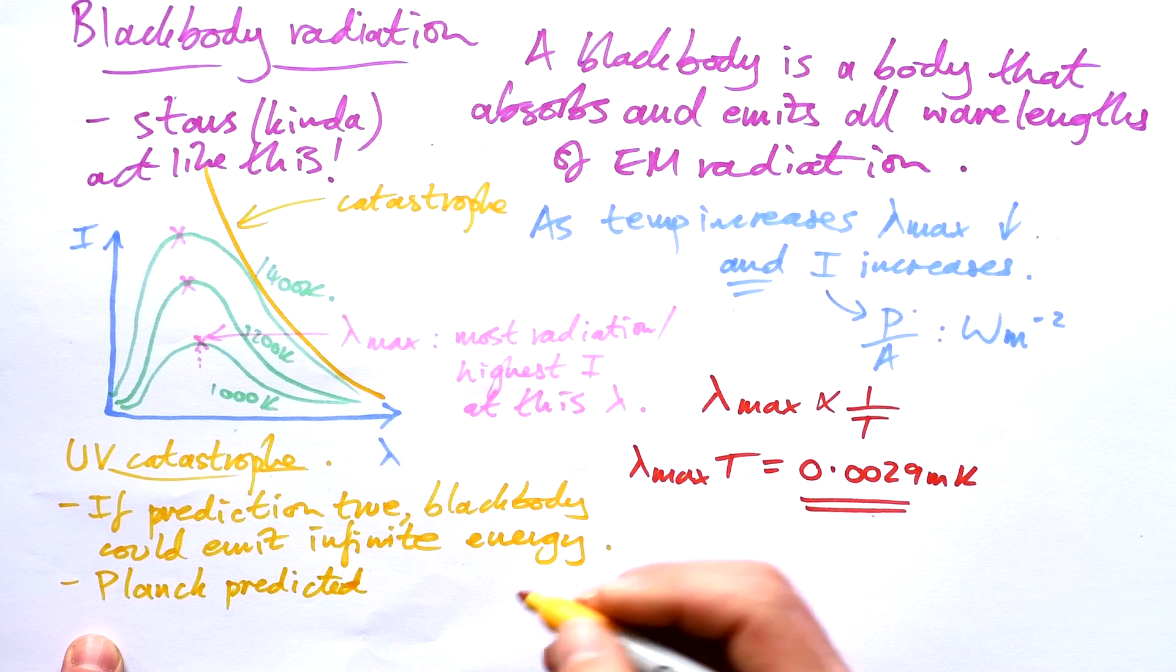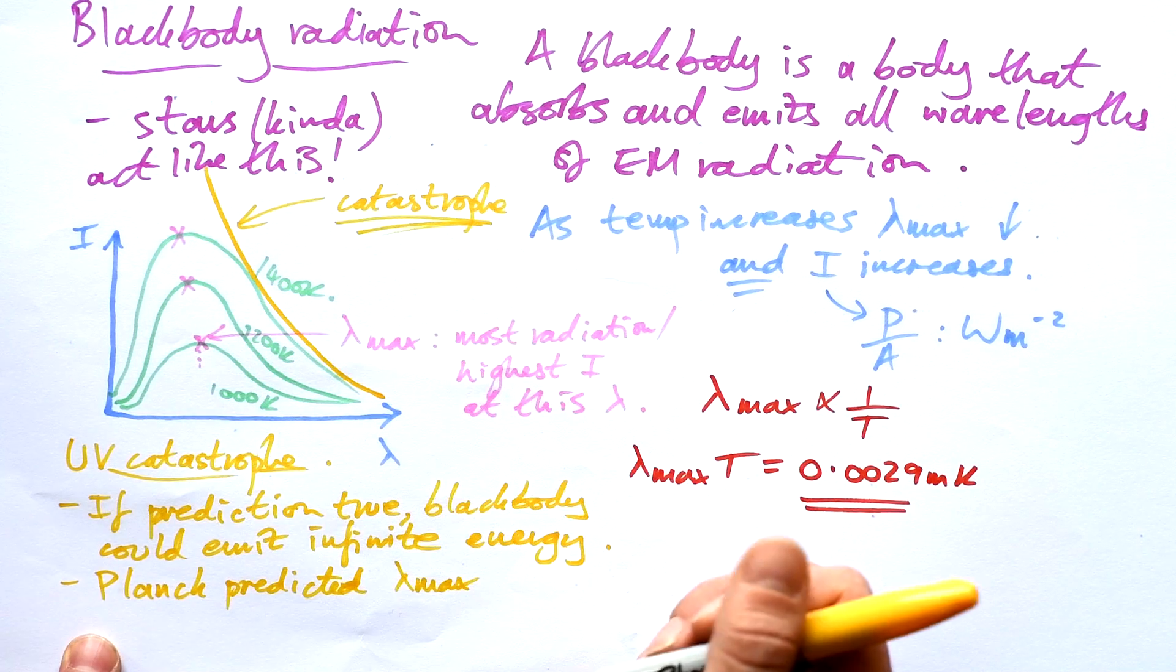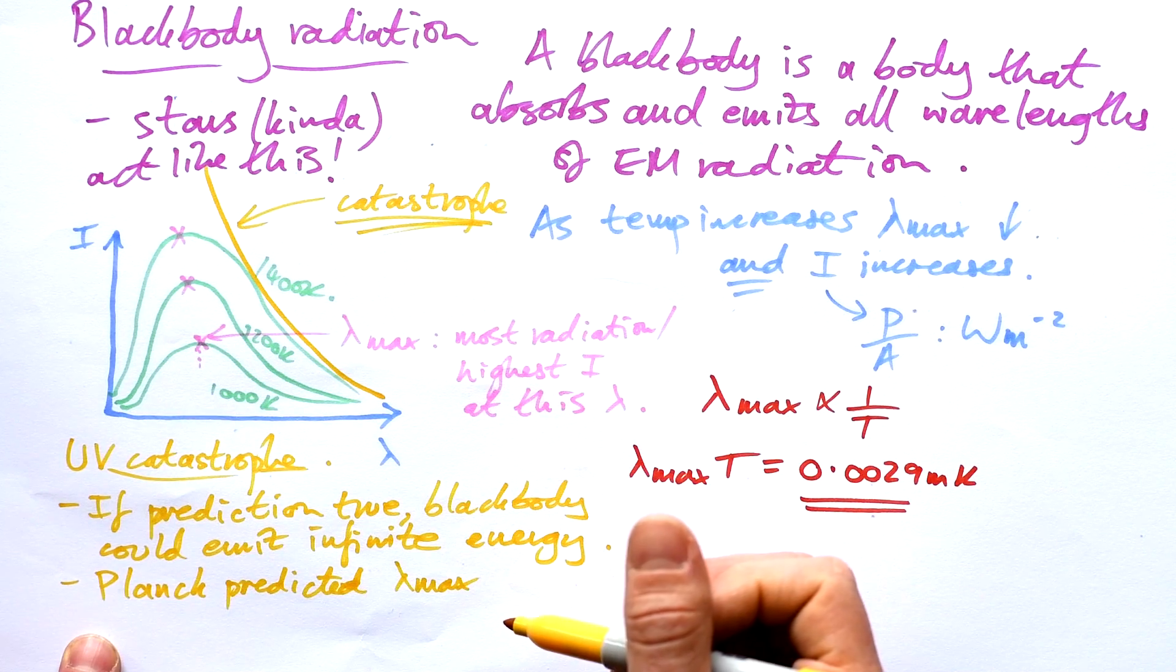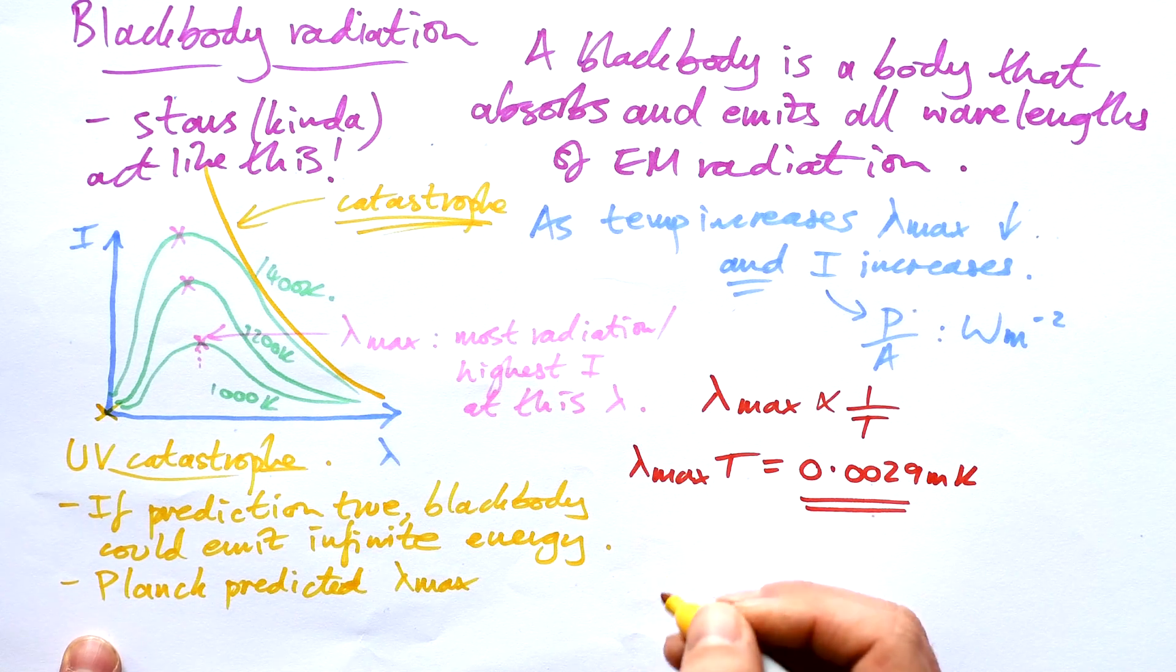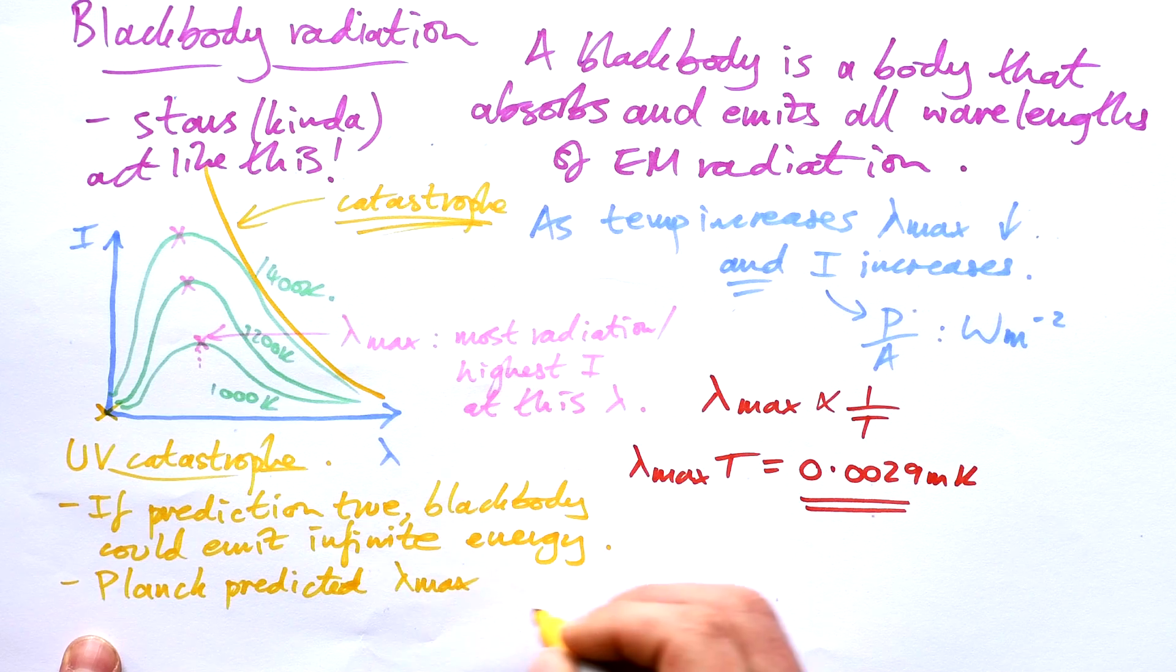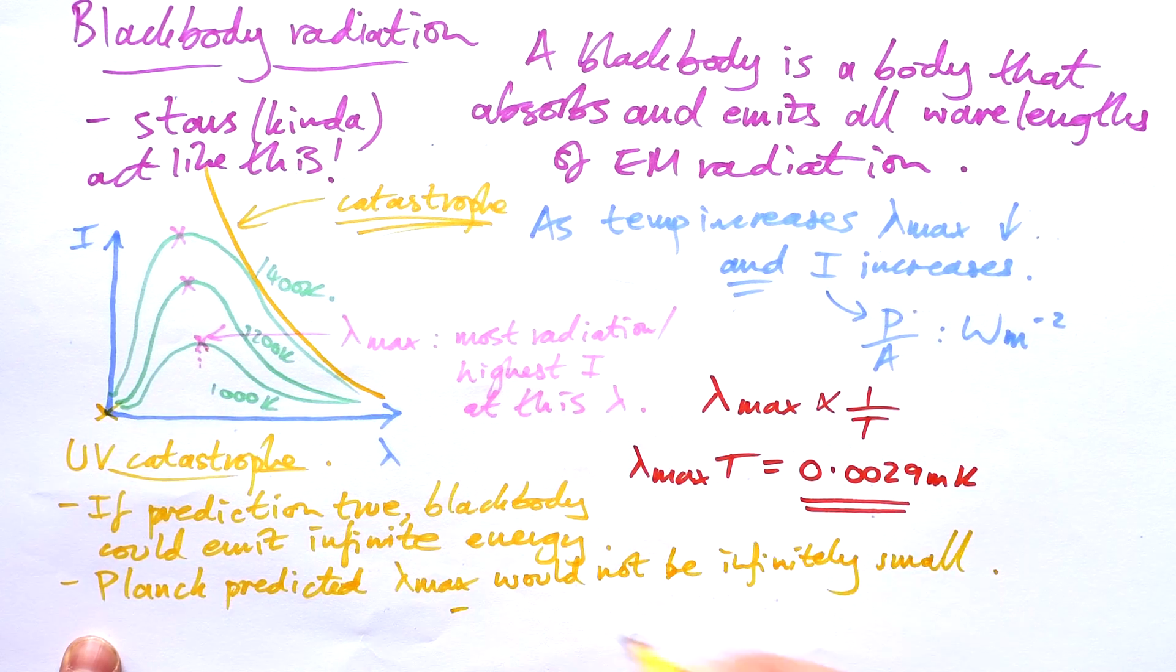It was Max Planck who predicted that we do actually have a max wavelength here, because a catastrophe predicted that actually we have an infinite amount of energy at an infinitely short wavelength. But it was Planck that predicted that this max wavelength here would not be infinitely small. And later, experimental data would then prove it. Clever Max Planck.